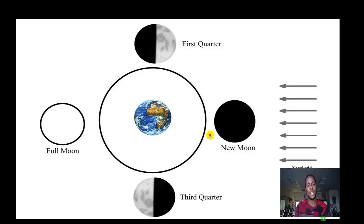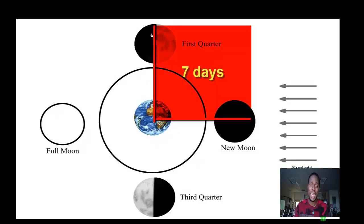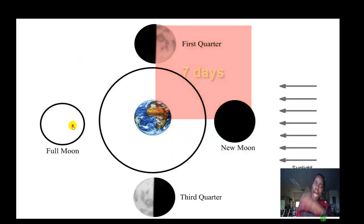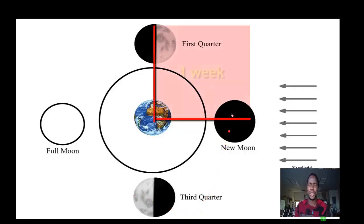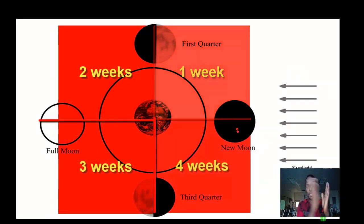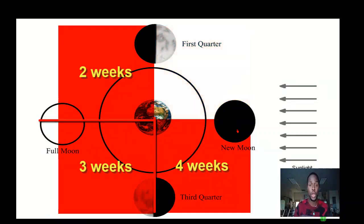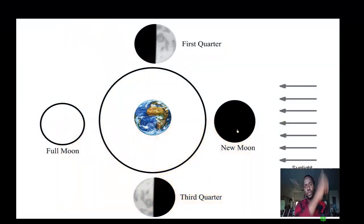It takes the moon approximately 29.5 days to go around the Earth. From new moon to first quarter is about 7 days, from first quarter to full moon is another 7 days, from full moon to third quarter is another 7 days, and then another 7 days back to the new moon. In a nutshell: one week, two weeks, three weeks, four weeks — making one calendar month of 28 to 30 days, which is one complete revolution of the moon around the Earth.